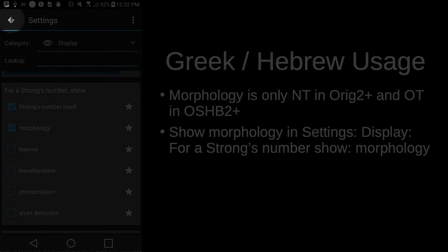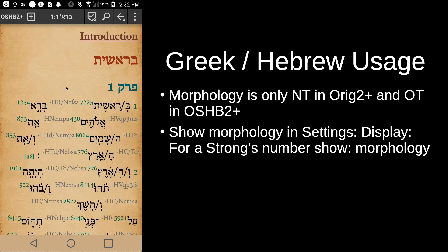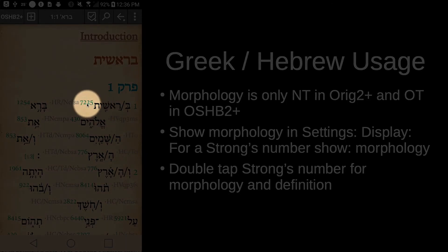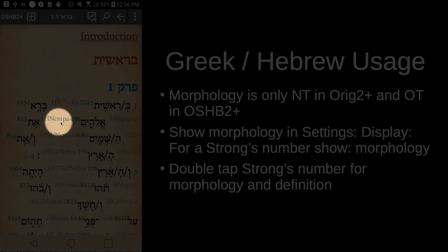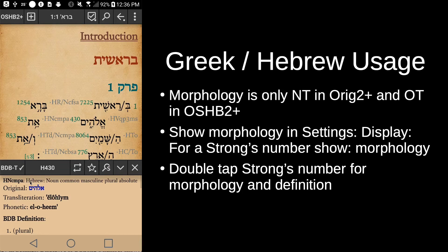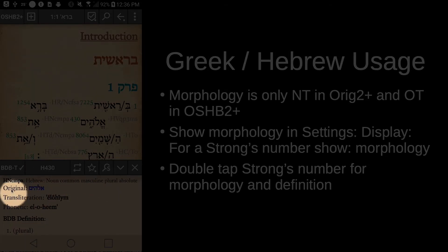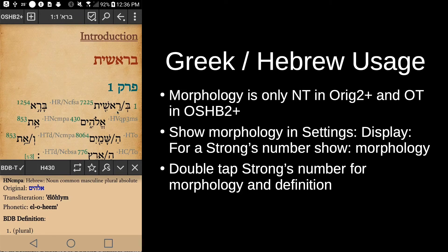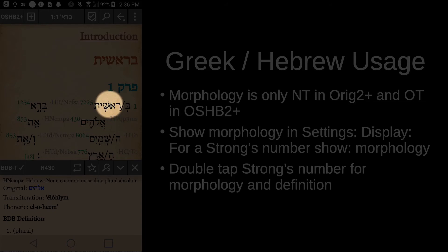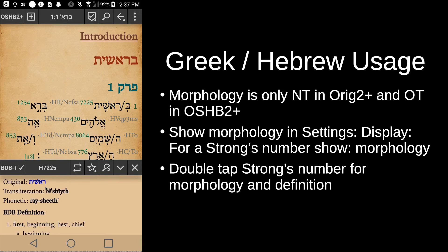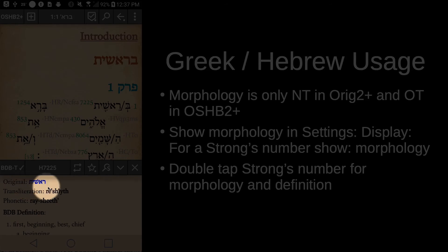Now going back, in addition to the Strong's number we now have the morphology of each word. Looking at Elohim, we have this string of morphology codes. We can double-tap the number 430 and it will tell us what that morphology string means, along with giving us the definition. Note that if you double-tap the word itself rather than the Strong's number, it will not pull up the morphology — you specifically have to double-tap the Strong's number to get the morphology.